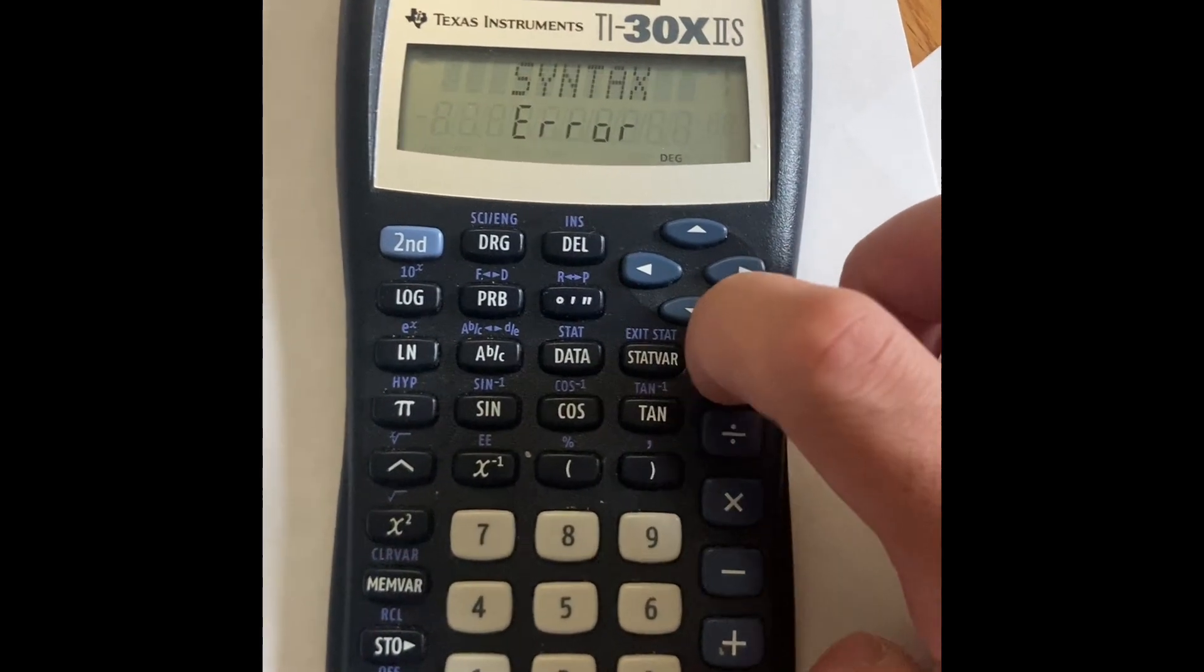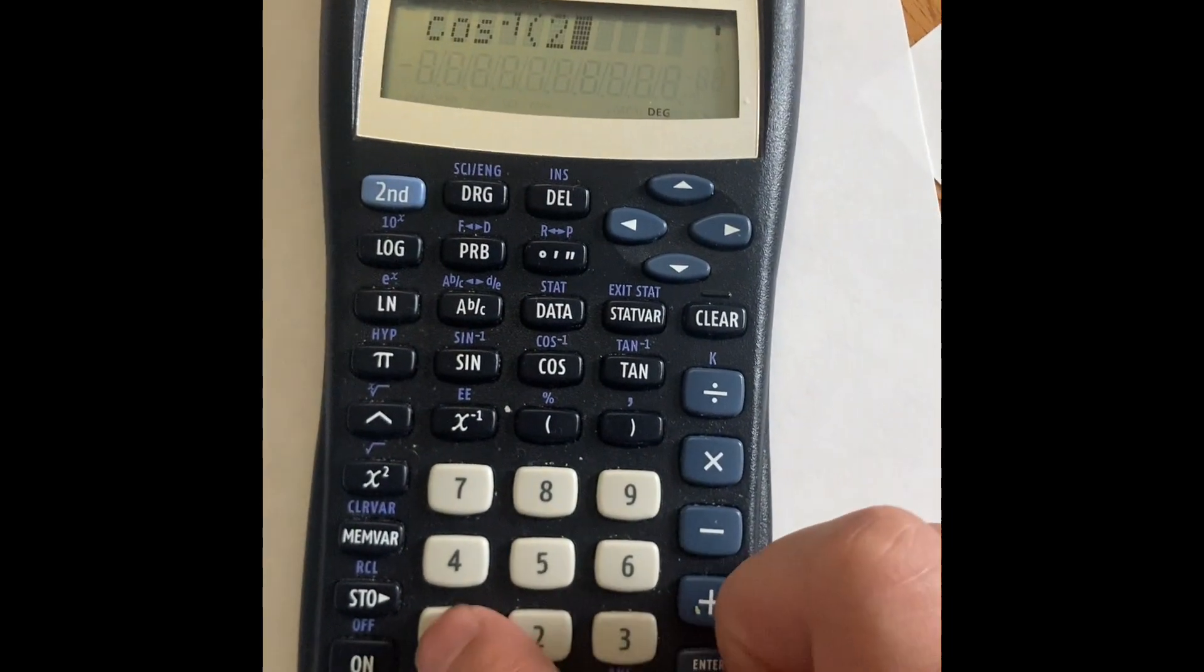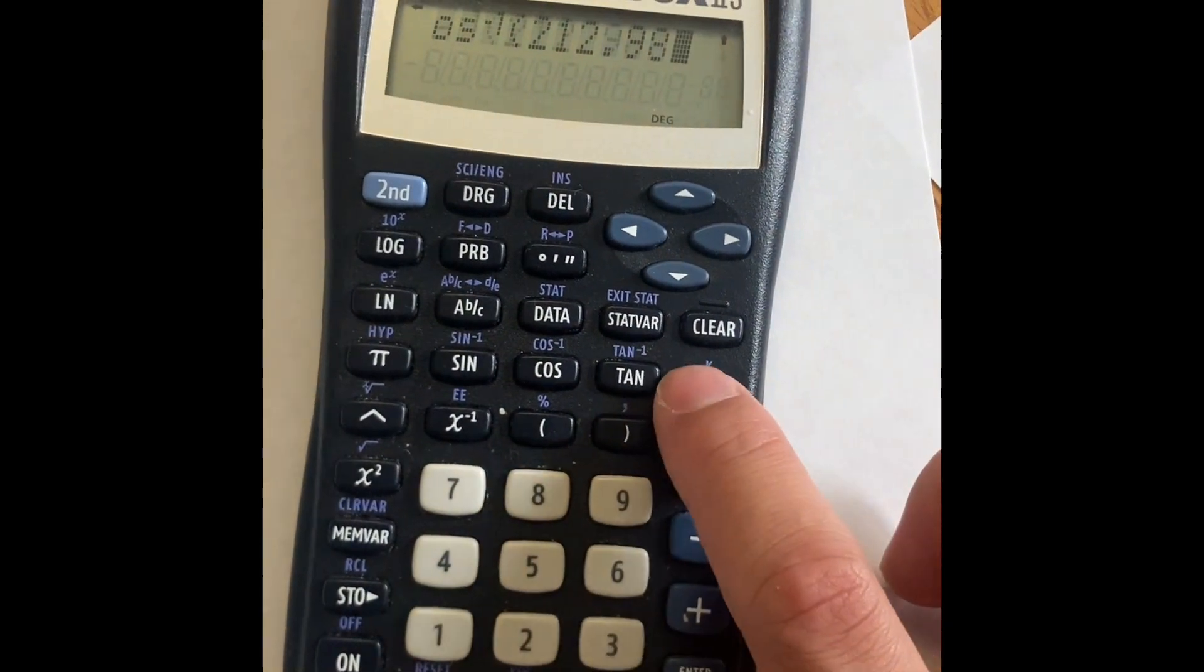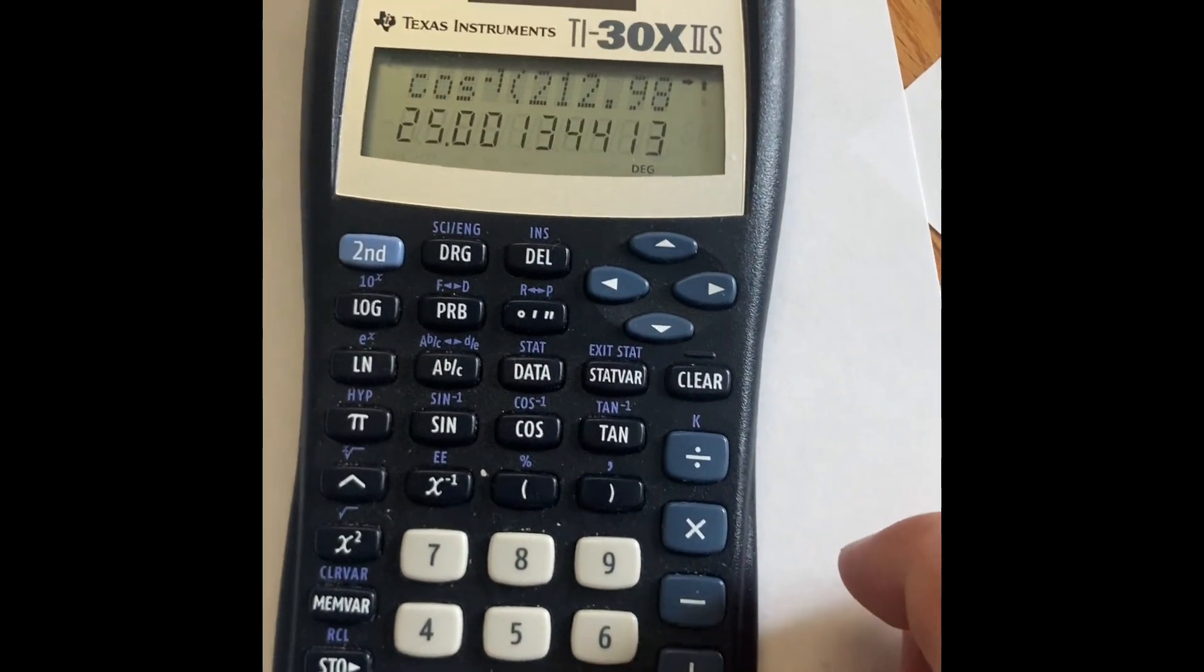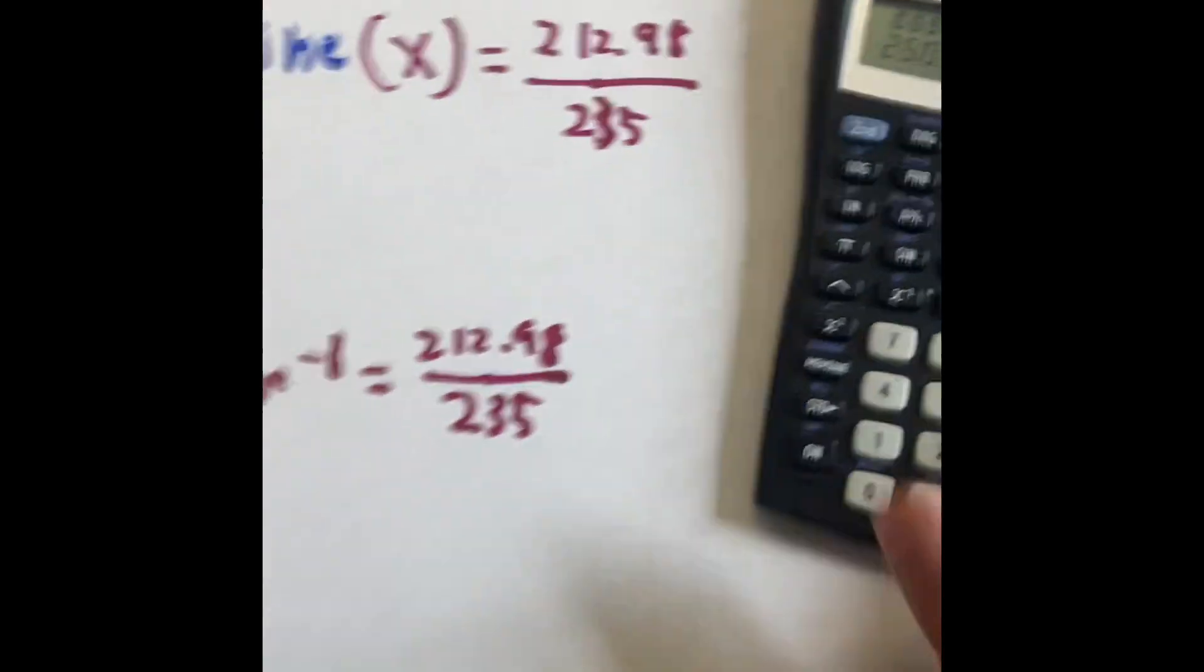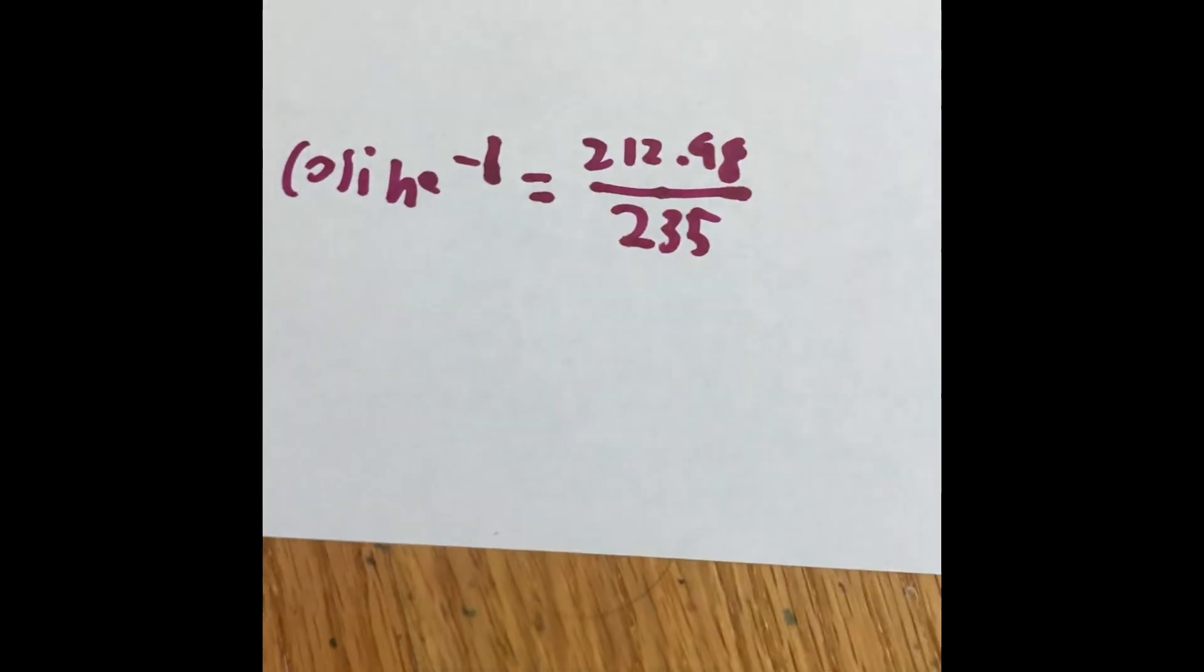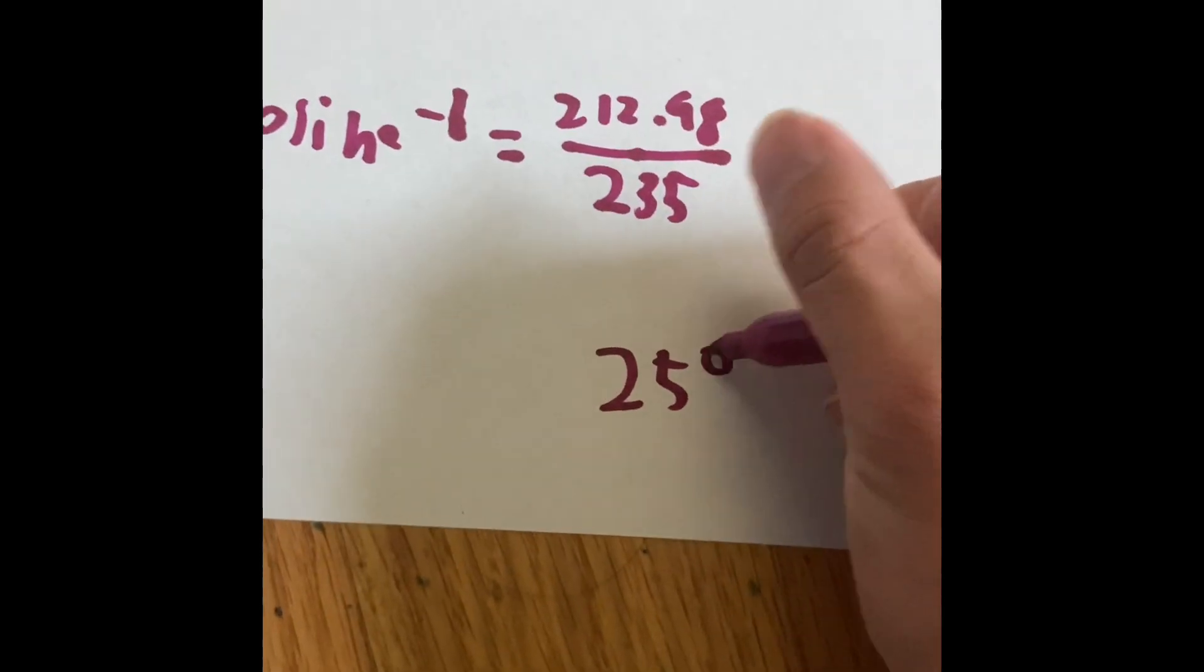We can't press the equal sign. We have to do 212.98, and we have to divide that by 235. And we get an answer of 25 degrees. So if we do the second of negative 1 of cosine equals this, but don't type the equal sign into a calculator, you get 25 degrees.